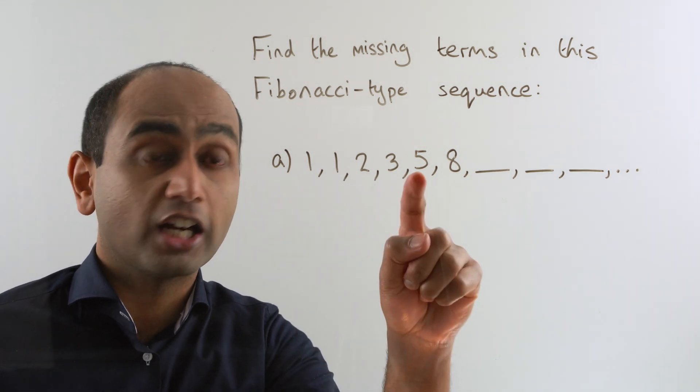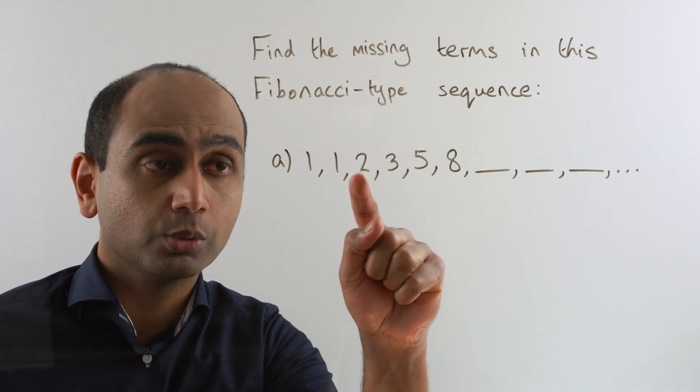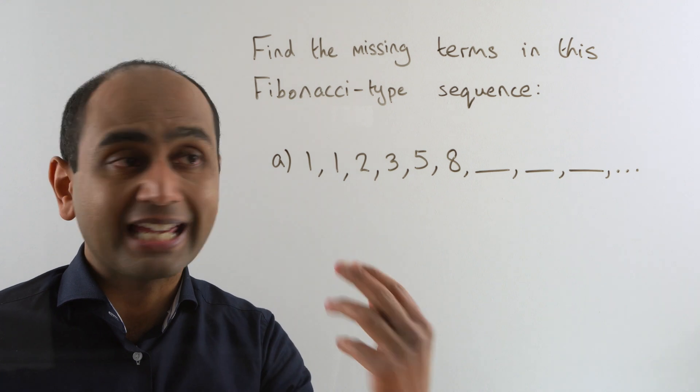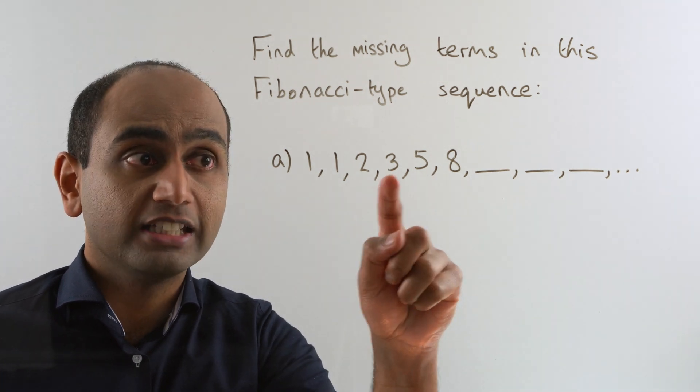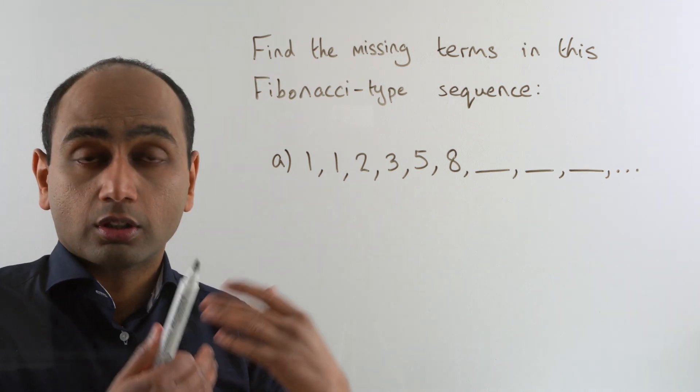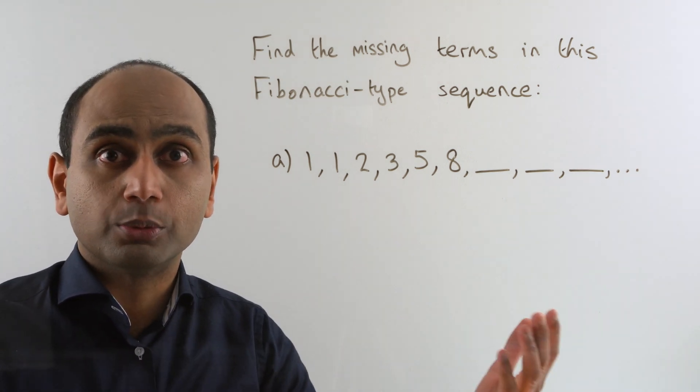To get this 5 we add the two previous terms, 2 plus 3, that gives us 5. To get the 8 we're simply adding these together: 3 plus 5 gives us 8. So that's how Fibonacci type sequences work.